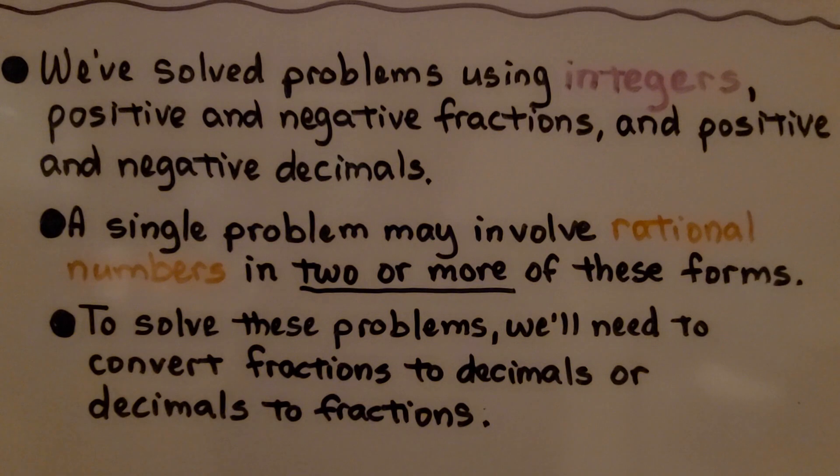We've solved problems using integers, positive and negative fractions, and positive and negative decimals. A single problem may involve rational numbers in two or more of these forms. To solve these problems, we'll need to convert fractions to decimals or decimals to fractions.